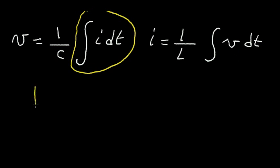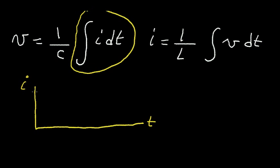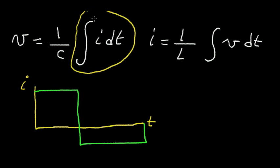Let's draw a graph of current versus time. This will be my time axis T and my current axis I. Let's presume that I have a current versus time where that current is more or less constant here, then it changes quickly, it reverses, current goes negative, it stays negative until this time here, it goes back to zero, and stays at zero. When you see this integral of I·dT, think area. Think area under a curve.